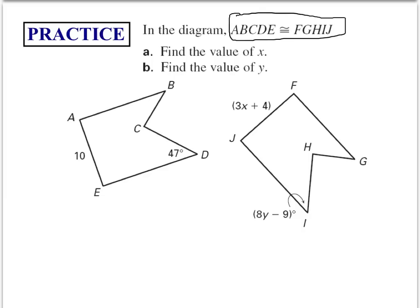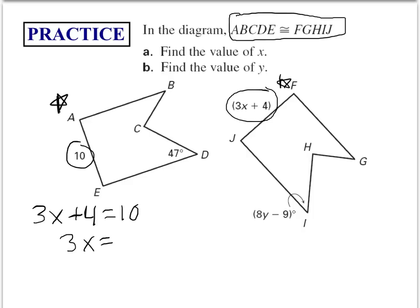Now we have shape ABCDE congruent to shape FGHIJ. To solve for X, I look for where X appears on the shape — it's on the side labeled 3x plus 4. I find the corresponding side on the other shape, which is 10. So I set up the equation: 3x plus 4 equals 10, giving 3x equals 6, so x equals 2.